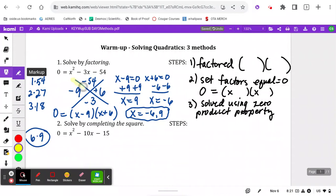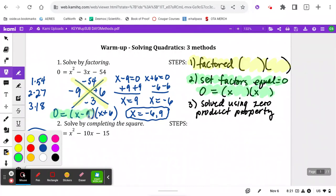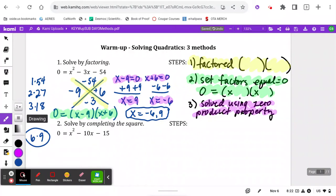So the factoring part, that was this right here. The setting the factors equal to 0, that's this part right here.